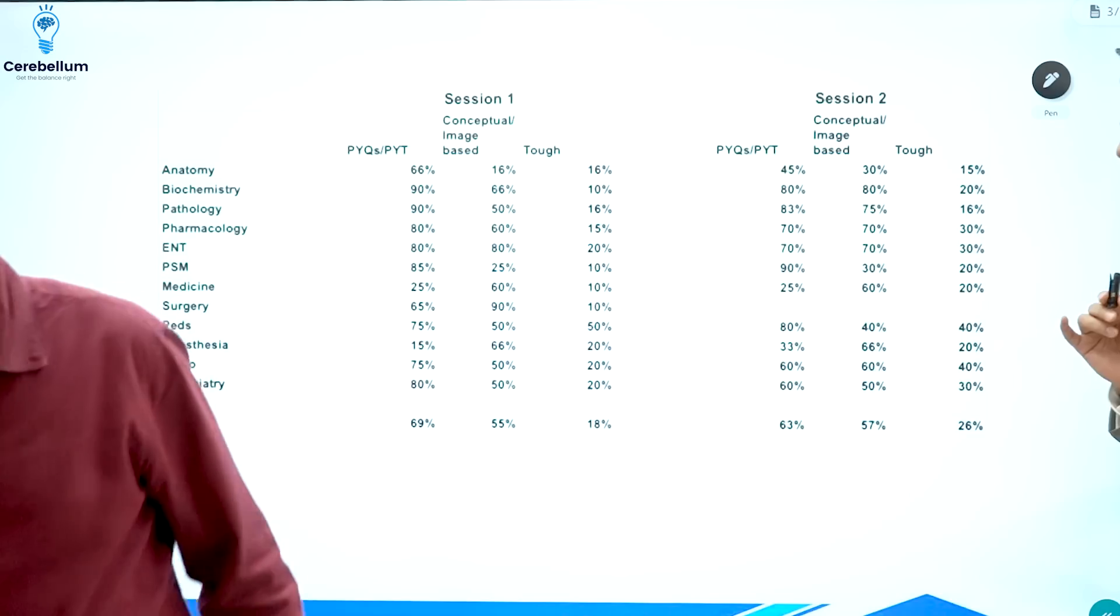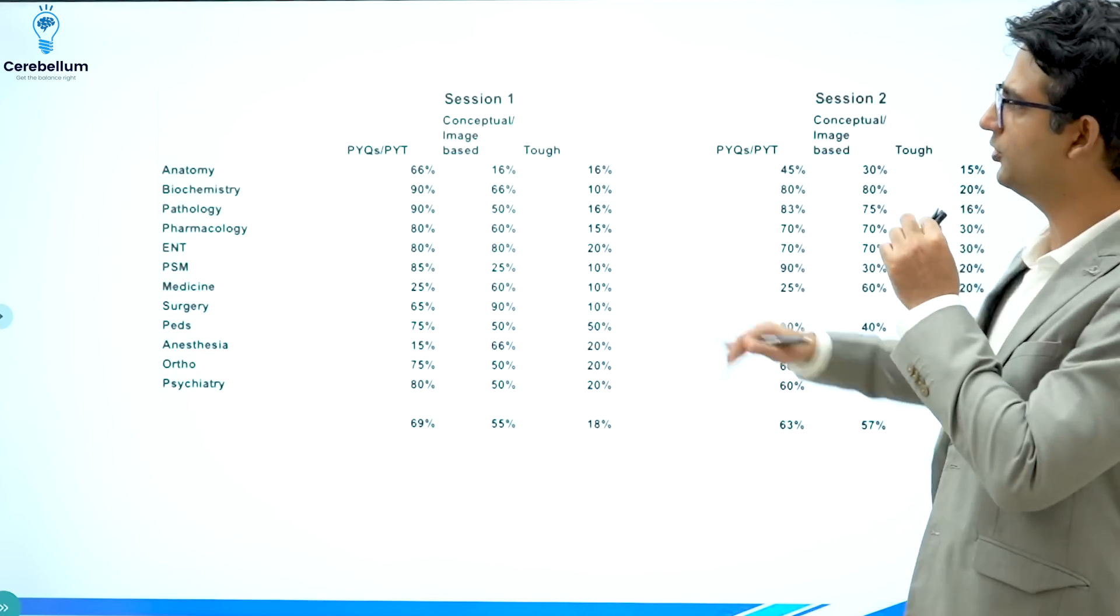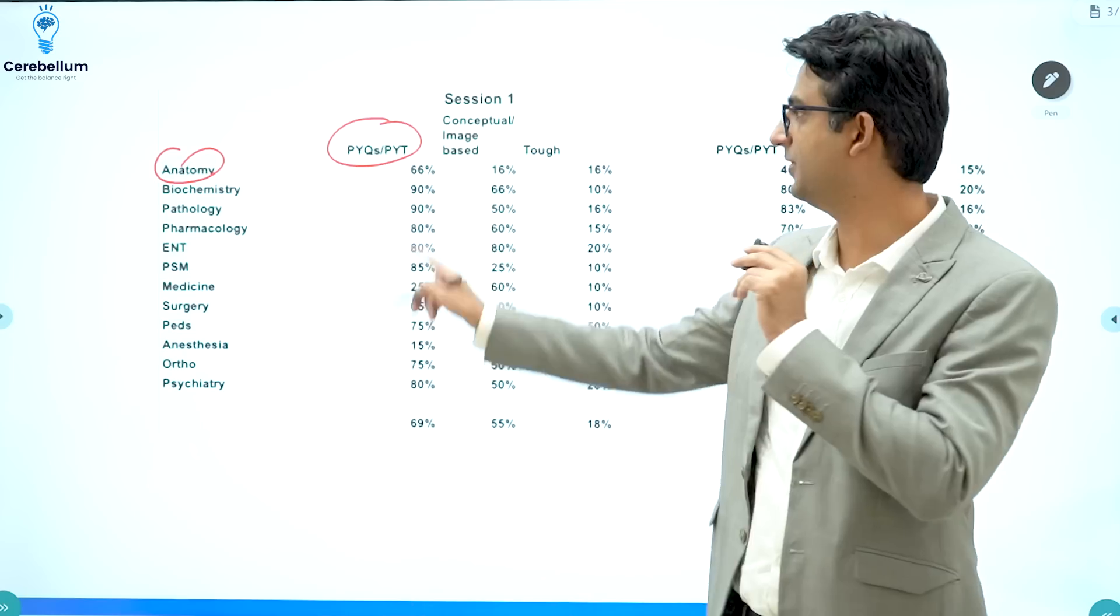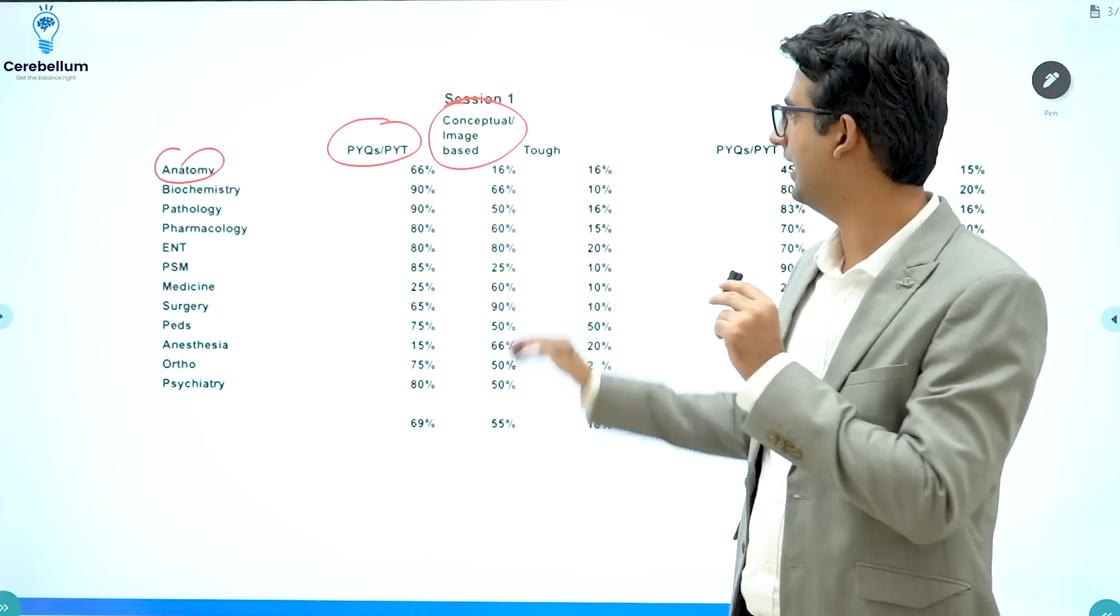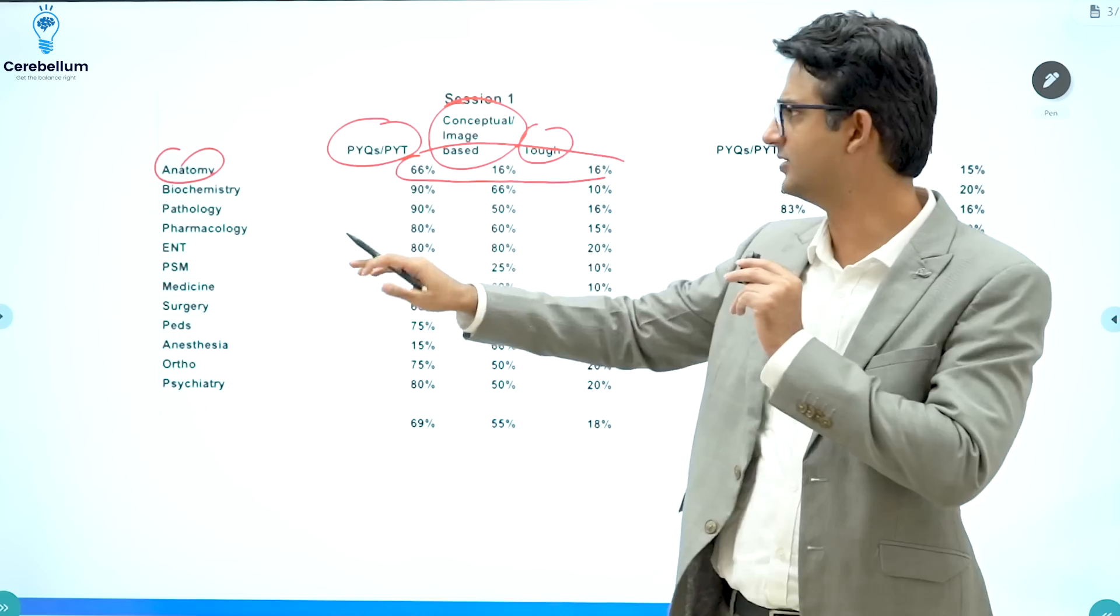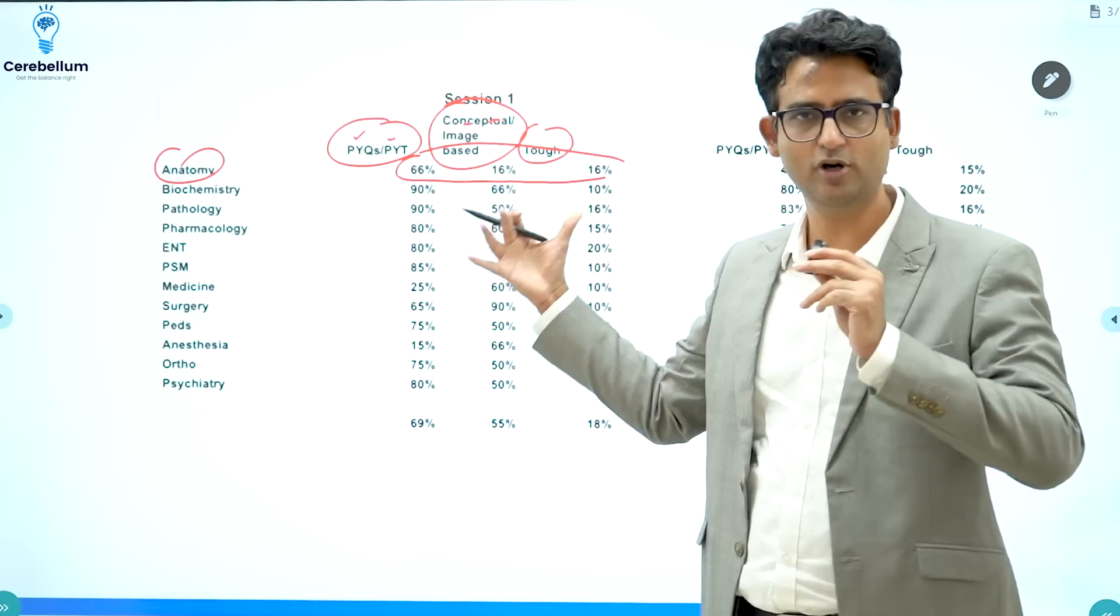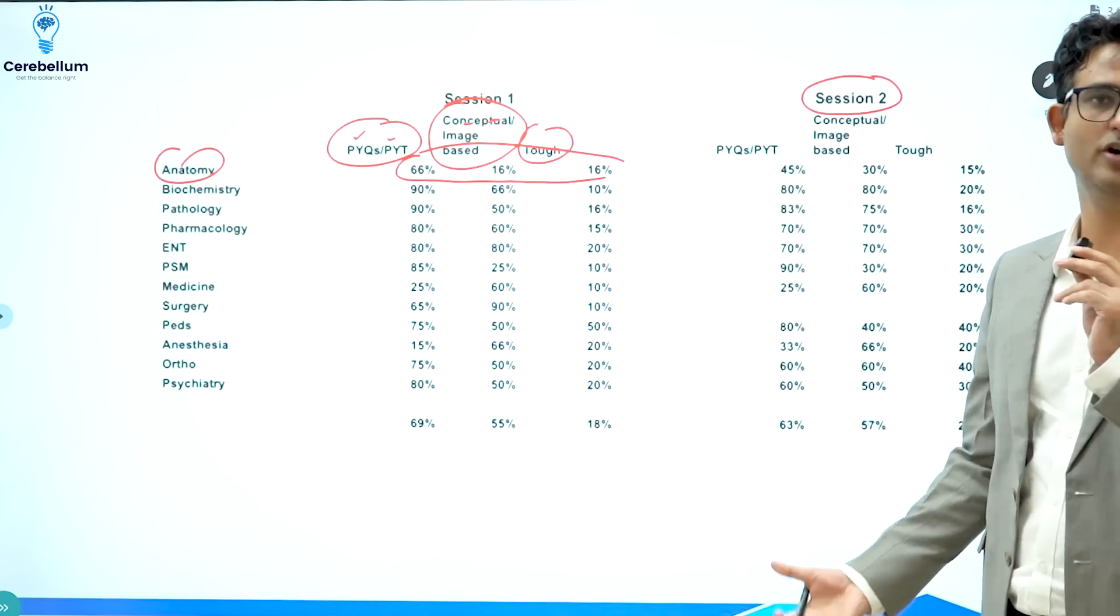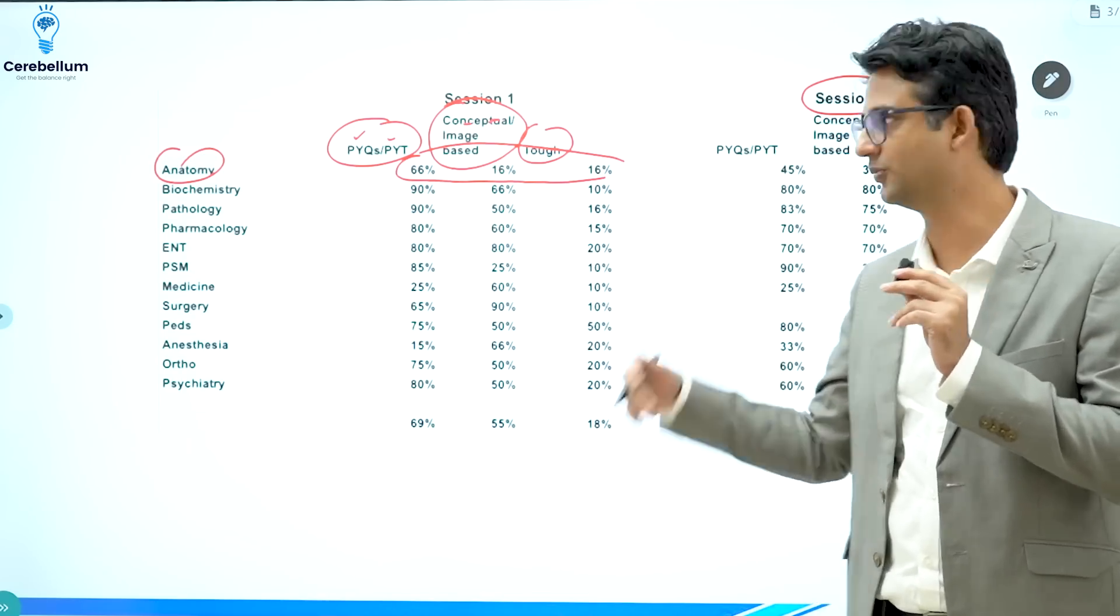So students, this is the data. For almost 14 or 15 subjects, I talked to the faculties and I asked them to fill this table. I asked every single teacher how many questions from your subject were PYQs or PYTs. The second question was how many of them were conceptual or image based and finally how many of them were tough. As you can see, it will not add to 100 because a PYQ can also be conceptual or a PYT can also be conceptual. So it would not add to 100 and that is perfectly fine. And we also did the same for session 2 because it is quite apparent, it is quite evident that there were significant differences between session 1 and session 2.